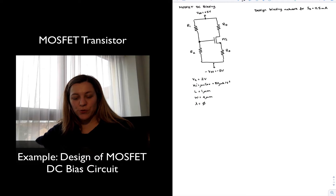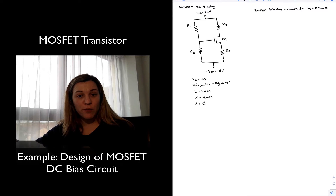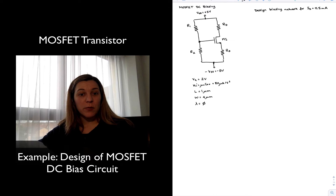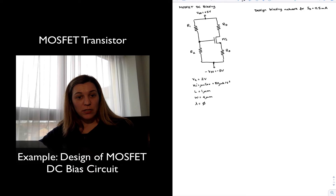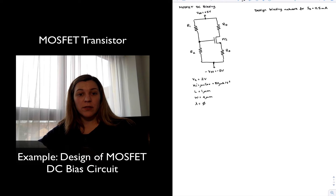Welcome back. In this video we are going to design a DC biasing network for an nMOS transistor. We have assumed a four-resistor biasing network powered from a dual supply of plus/minus five volts, designing the biasing network for a quiescent drain current of 0.5 milliamps. Transistor parameters include a threshold voltage of two volts, process transconductance parameter Kn' of 80 microamps per volt squared, length and width of one and four micrometers respectively, and we neglect channel length modulation by setting lambda equal to zero.